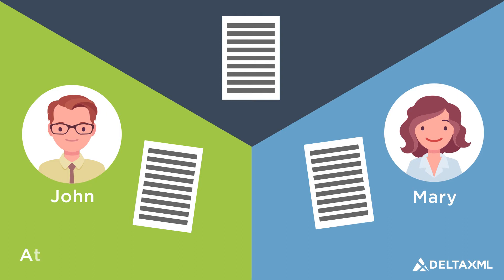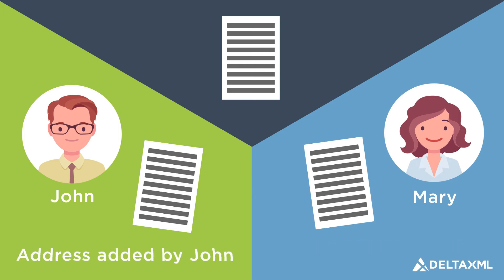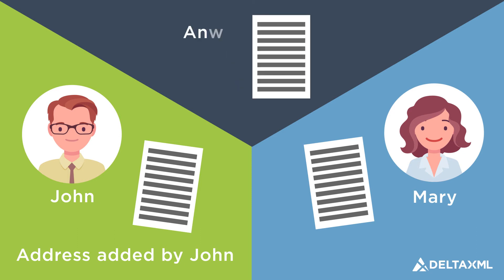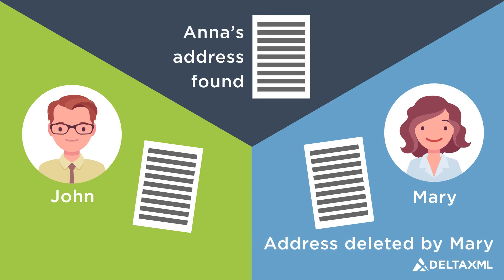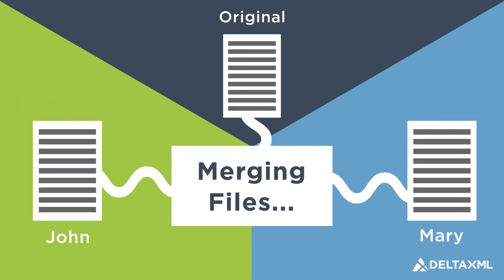If we find Anna's address in John's file but not in Mary's file, then it looks as if it has been added by John. But it's also possible that it was there in the original version and has in fact been deleted by Mary.